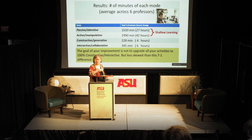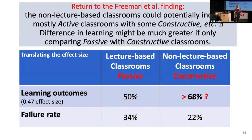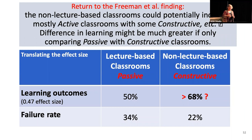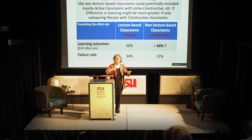Returning to the Freeman study: the lecture-based classrooms he compared were probably mostly Active, not truly Passive. So the 68% versus 50% difference would be even larger if you were comparing purely Passive with truly Constructive classrooms. Freeman was mostly comparing Passive with mostly Active.